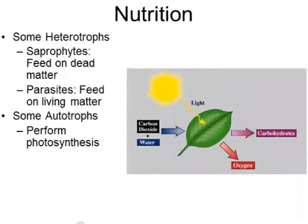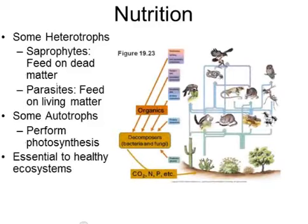Some bacteria are autotrophs. A group called cyanobacteria perform photosynthesis — they have chlorophyll, which absorbs sunlight, and with water and carbon dioxide they make their own glucose. Bacteria are also really important to ecosystems. Looking at a food web, decomposers like bacteria and fungi sit near the bottom, adding nutrients back into the soil so that plants can live healthier and ecosystems overall benefit from their presence.